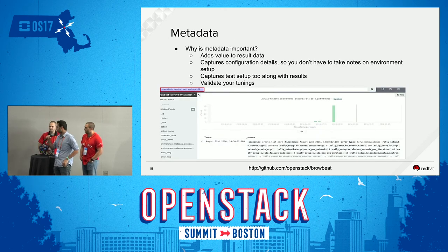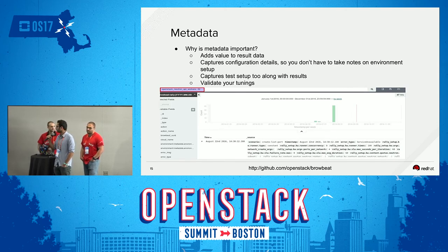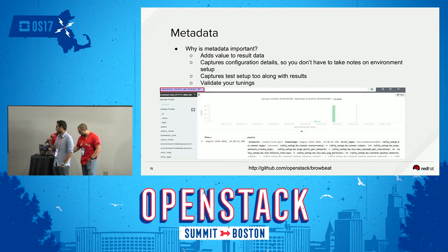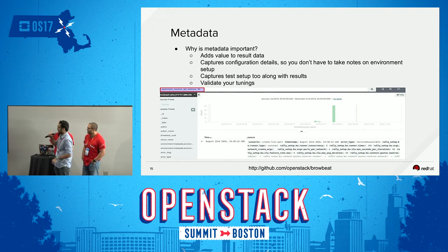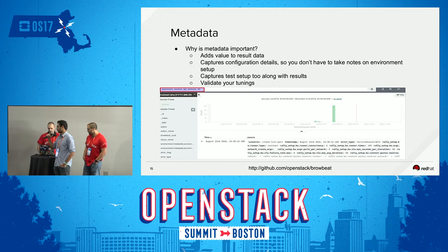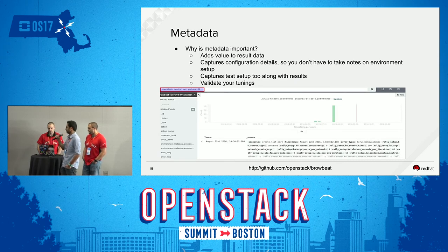Metadata is important because it adds value to the result data. If you have a result and don't know any of the test parameters or how the environment was set up, it won't mean anything. For example, we can filter on Neutron API workers — Elasticsearch will only show you results where Neutron workers was set to 32. This helps validate your tunings and is much better than working through hundreds of spreadsheets.